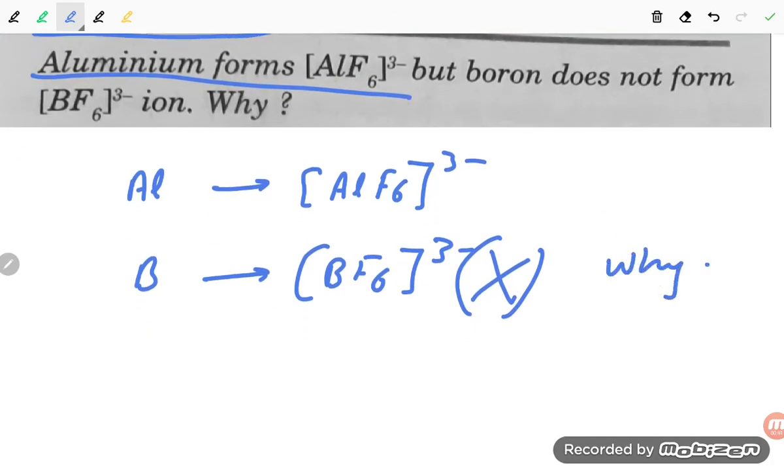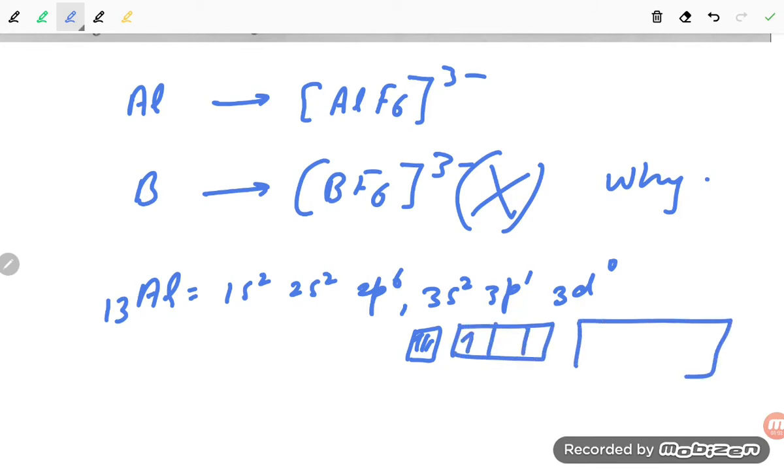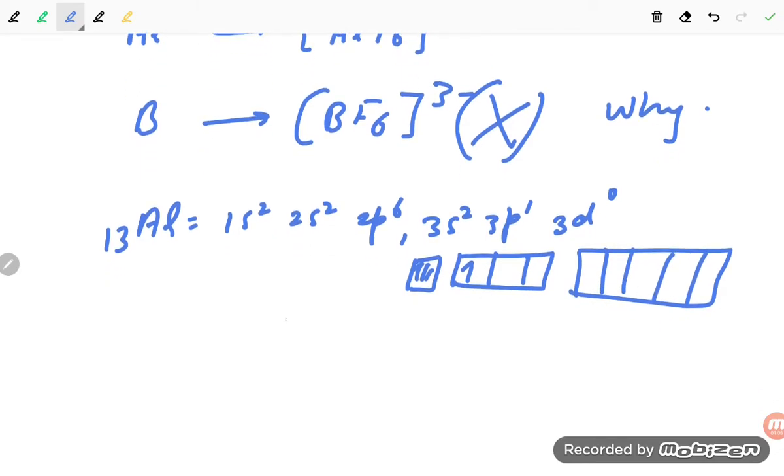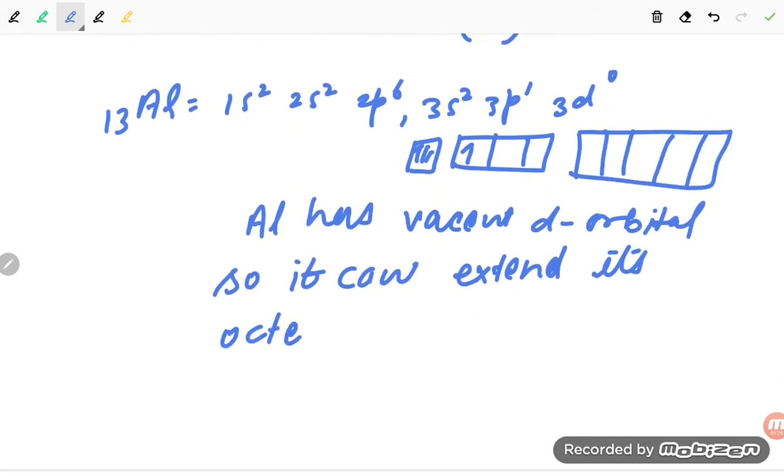If you see the aluminum configuration, aluminum is 13, so 1s² 2s² 2p⁶ 3s² 3p¹ 3d⁰. You can see two electrons here, one electron here, and vacant orbitals. Aluminum has vacant d-orbitals, so it can extend its octet and form [AlF6]³⁻.